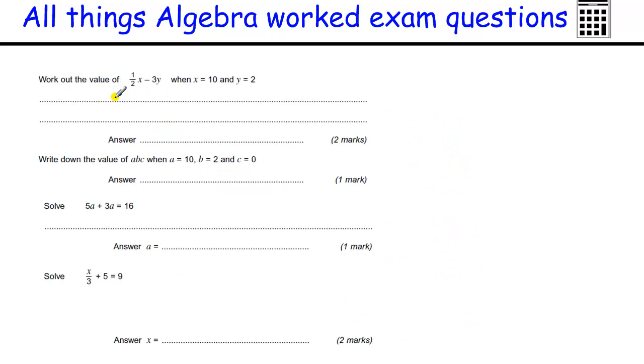Okay. Working out some values, when we substitute some values in, so 1/2x plus 3y, the 1/2 of x, x is 10, minus 3 lots of y, y is 2, so we've got 3 times 2. The 1/2 of 10 is 5. Take away 3 times 2 is 6. You must work out these before you do the subtraction. You must do the times in first, so 5 take away 6 is negative 1.